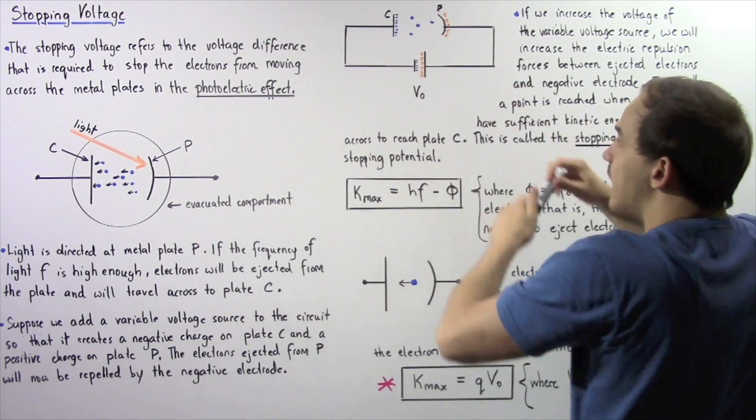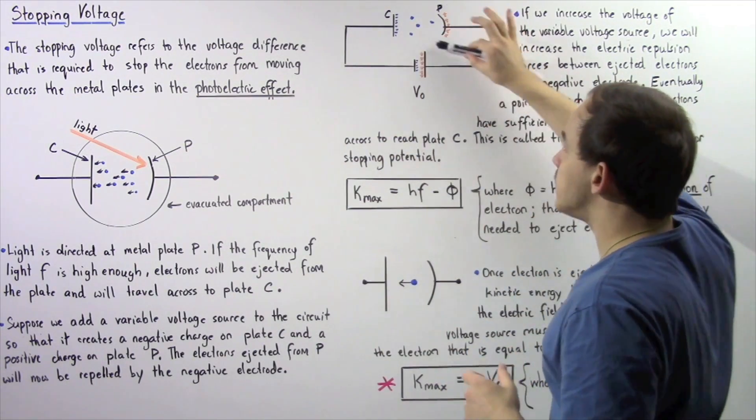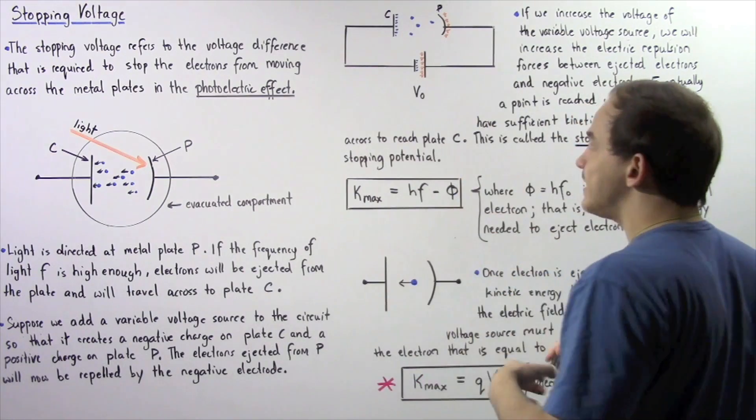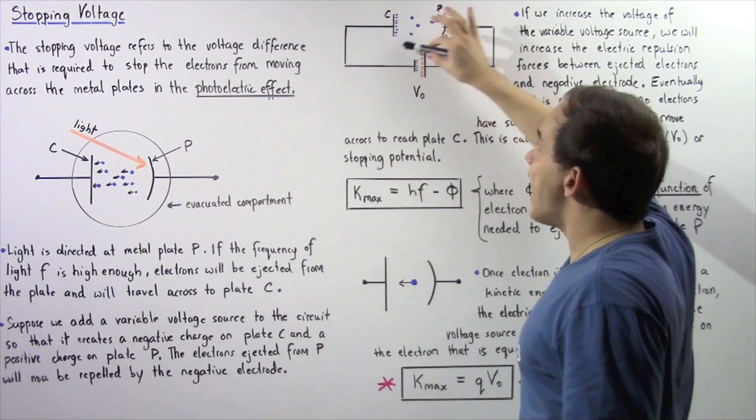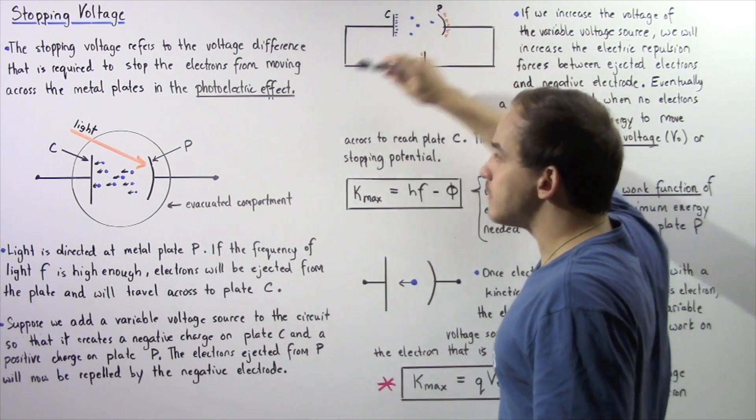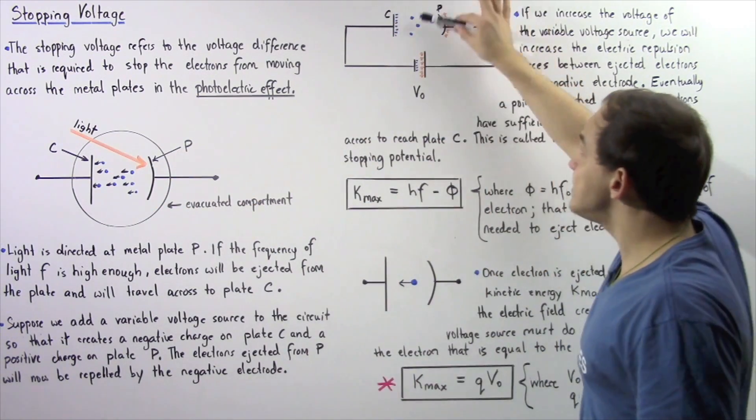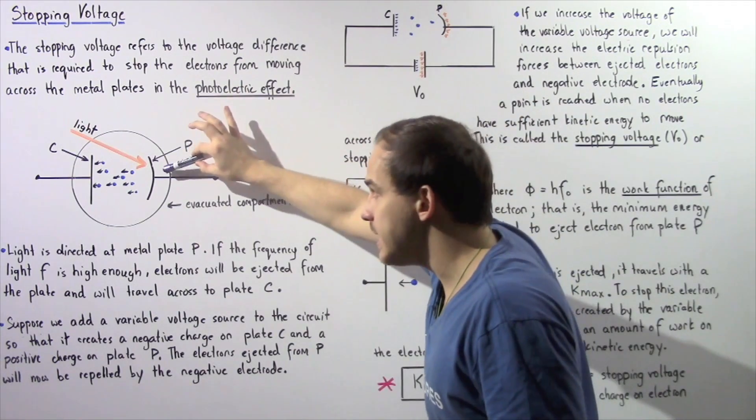And we take that voltage source and place it inside the electric circuit that is connected to the following diagram. So as shown in this diagram, we take the variable voltage source and place it inside in such a way so that voltage source creates a negative charge on plate C and a positive charge on plate P.